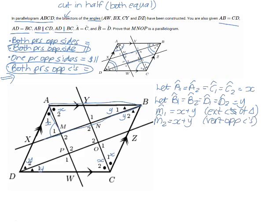Now looking at O2 — highlighting this triangle — O2 is also the exterior angle of a triangle, so O2 is also equal to x plus y. Therefore, we have just proven that M2 is in fact equal to O2.